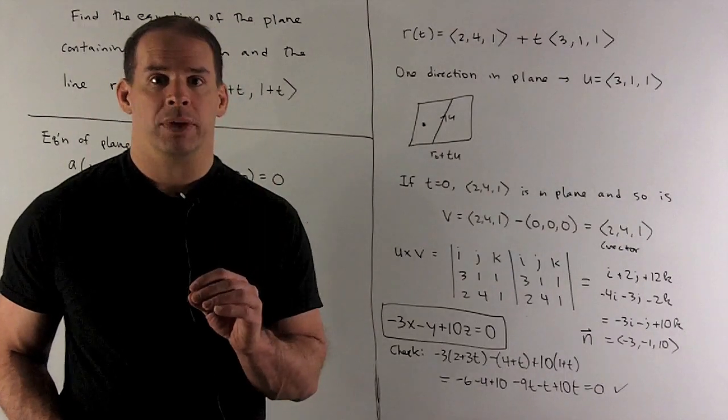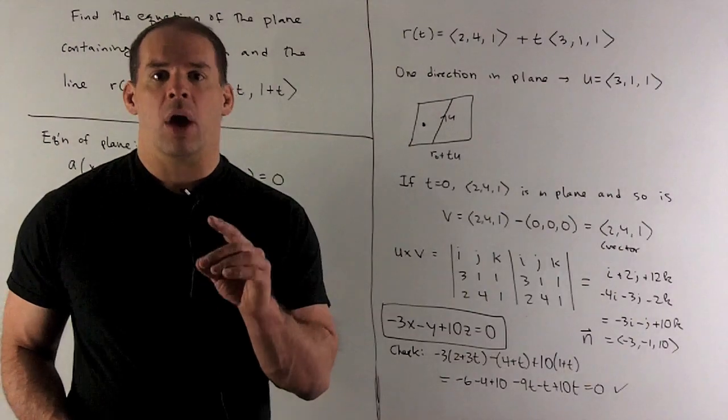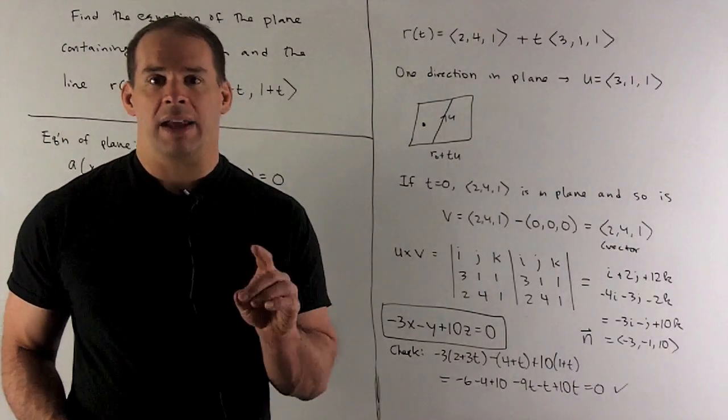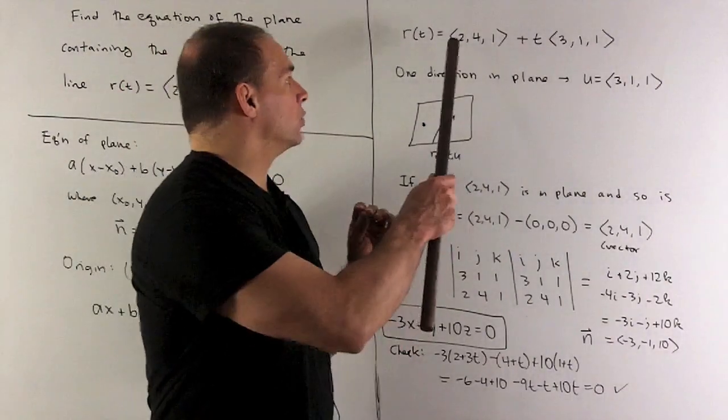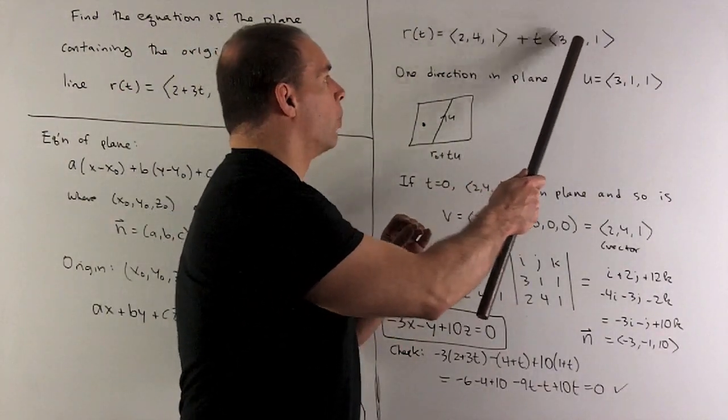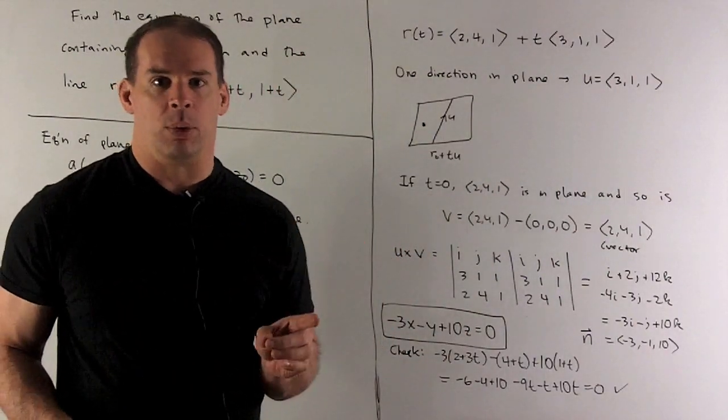So that's my v. For my u, I actually don't have to go and find a point. I know I can write my line in point direction form as (2, 4, 1) plus t(3, 1, 1). (3, 1, 1) is going to be the direction that our line points in.